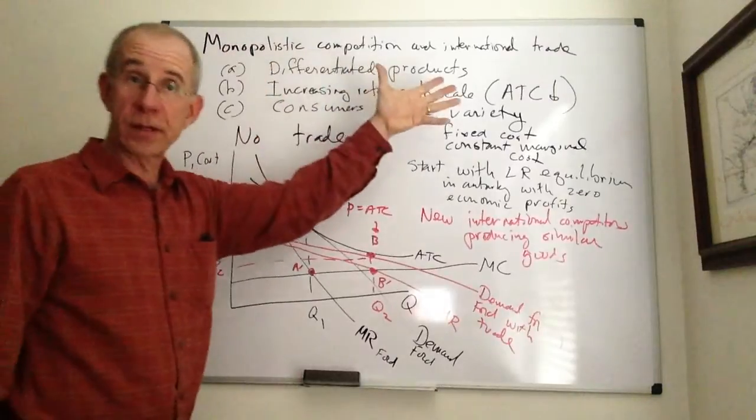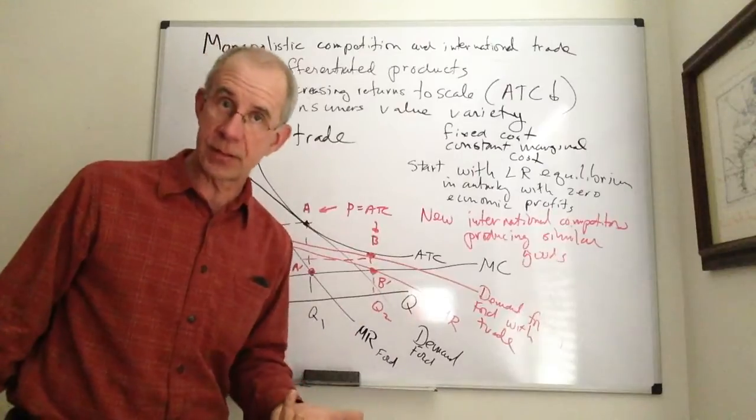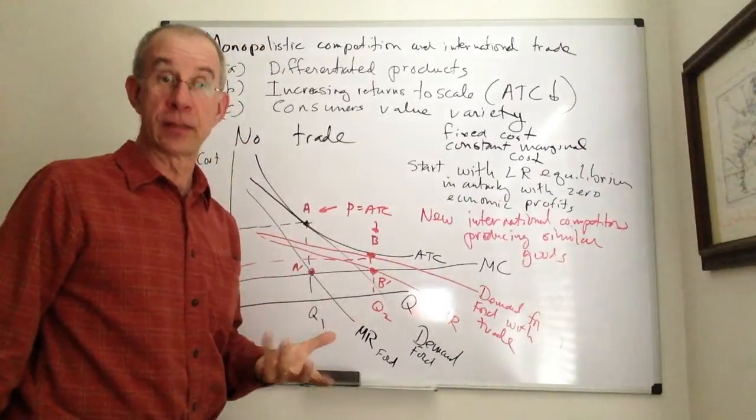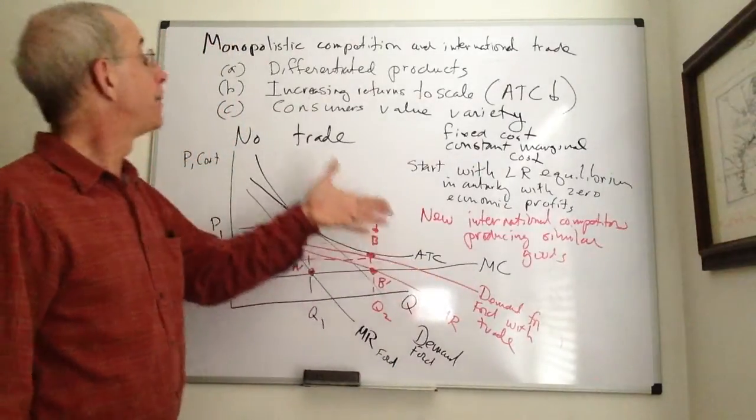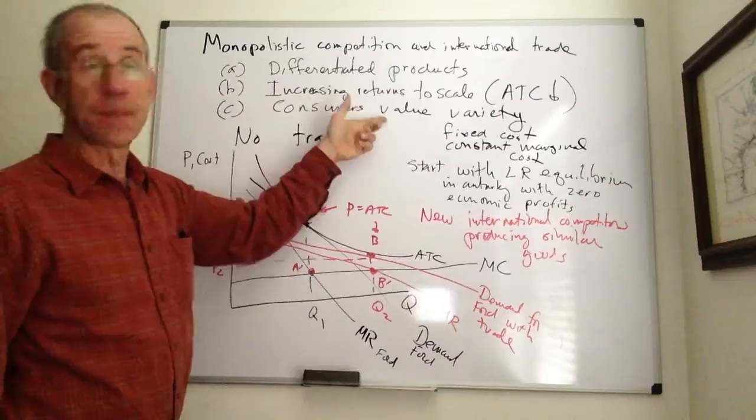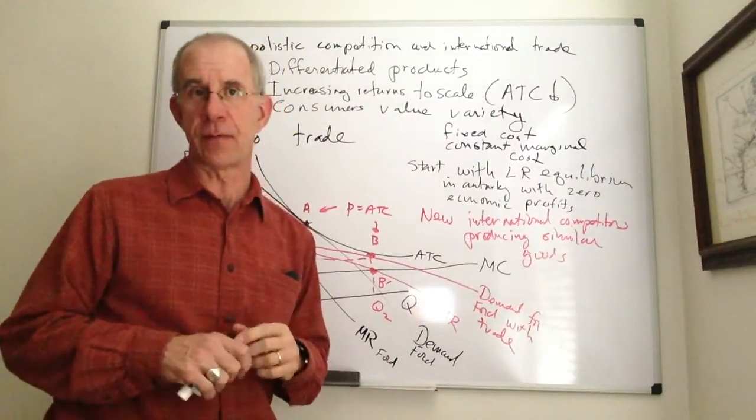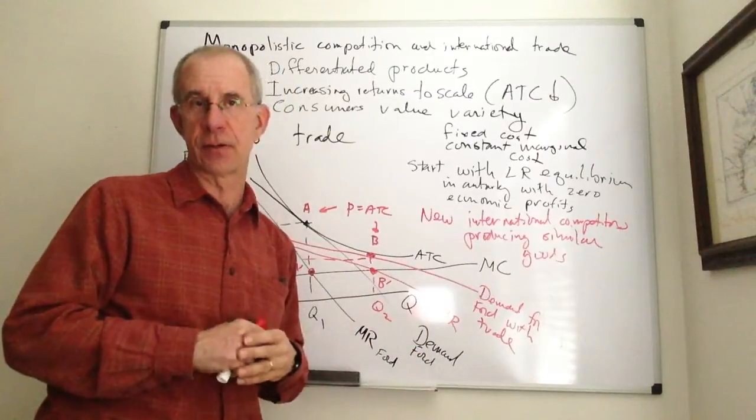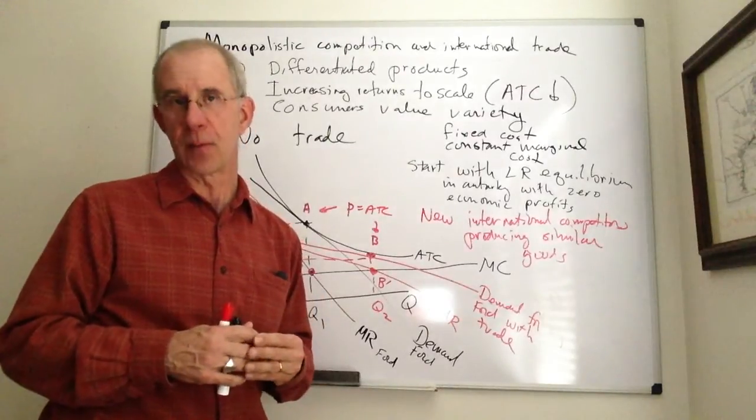So, this is the basic story with monopolistic competition in international trade, which says that there's another reason why you might want to have international trade, because of the cost reductions and because of the increased variety. And this is the basic story of that alternative to the standard, perfect competition, Heckscher-Ohlin, Ricardian type framework.